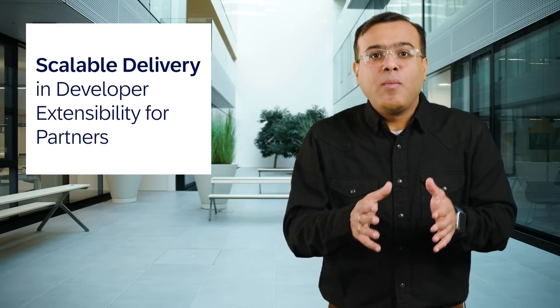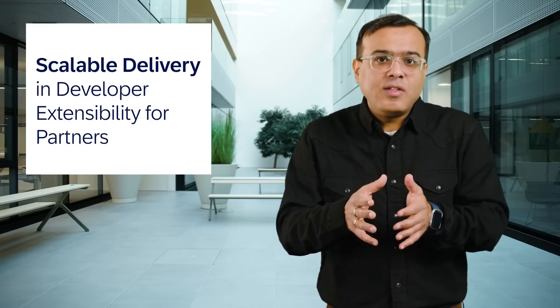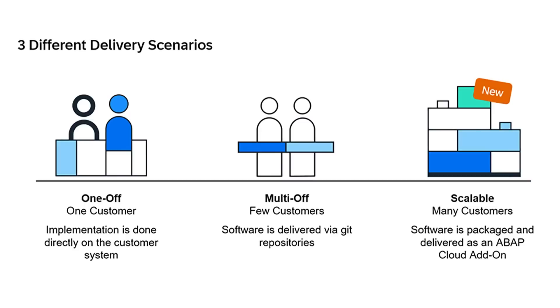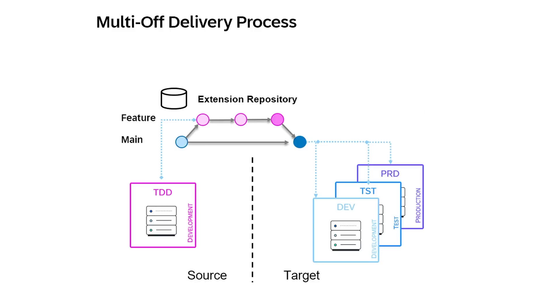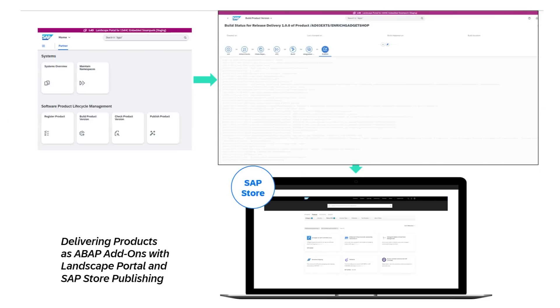This concept will transform how partners develop and distribute ABAP cloud extensions. With one-off delivery, customers or partners can develop and deploy custom ABAP code within their SAP S4HANA Cloud landscape. Multi-off delivery takes this a step further by enabling partners to deliver ABAP developments to multiple landscapes and customers. But what if your ambitions are bigger? What if a partner wants to deliver it to an unlimited number of customers? That's where scalable delivery truly shines.